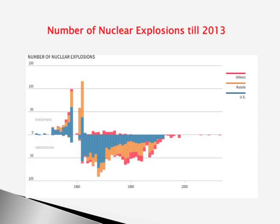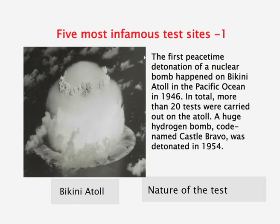You can see in this graphic how nuclear explosions up to 2013 took place — the red and orange show the story of how the US, Russia, and other countries conducted tests on and on. Let us look at the top five famous test sites and what happened to the people around them.